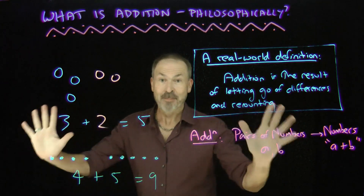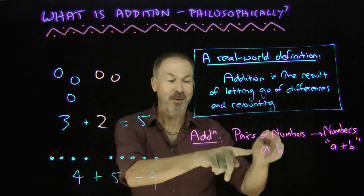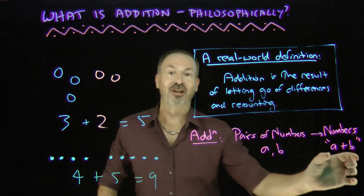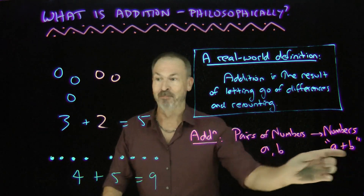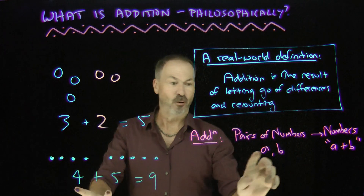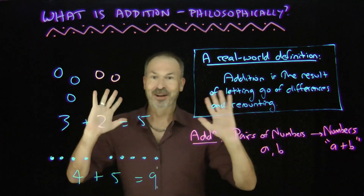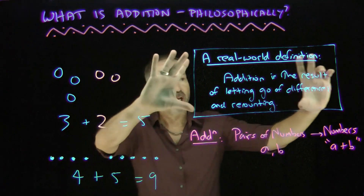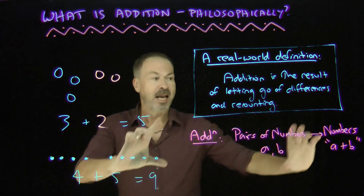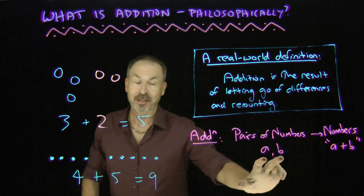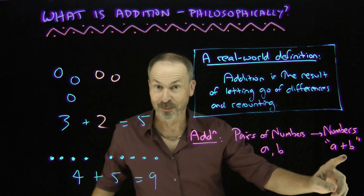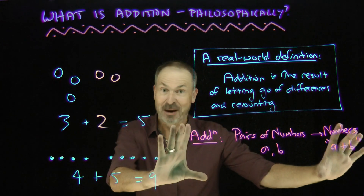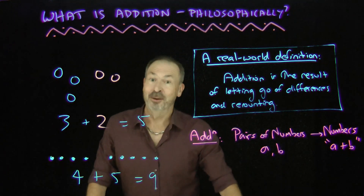So it looks like we've got some kind of operation on pairs of numbers. If you give me two numbers A and B, I'm actually doing this operation that creates a third number I'm calling A plus B. Got a three and a two, I'm getting a five. Got a four and a five, I'm getting a nine. So now we're getting going on what addition is — there's a real-world context motivating some sort of operation that takes pairs of numbers and creates a third number. There are going to be some details to add to this definition, so let's explore those next.